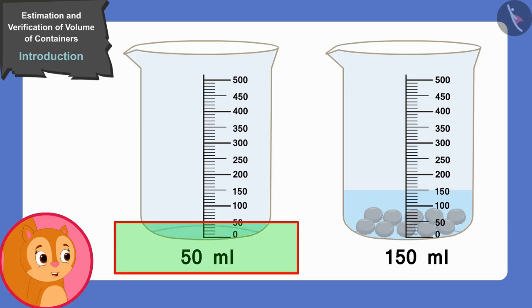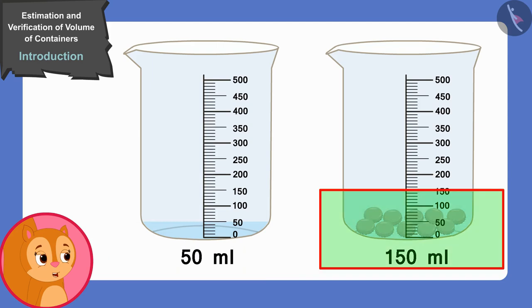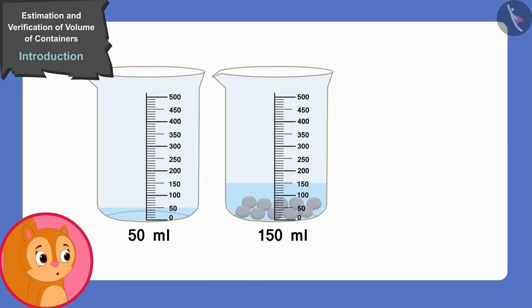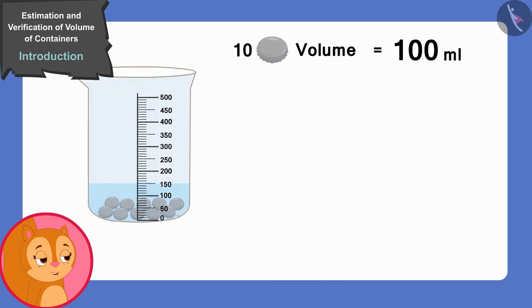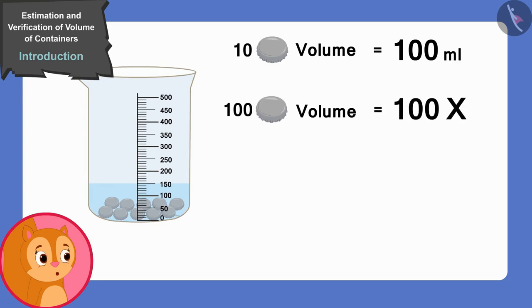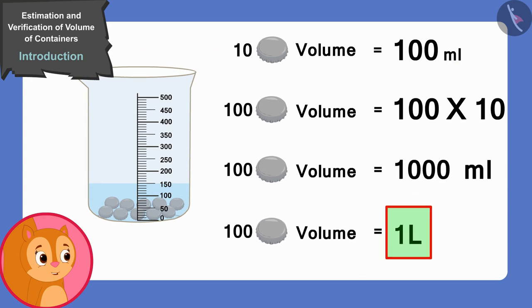First the water level was at 50 ml, and now it has risen to 150 ml. That means the volume of 10 lids is 100 ml. Then the volume of 100 lids will be 100 multiplied by 10 — that means 1000 ml or 1 litre. Chanda concluded: I have to take a container of 1 litre.